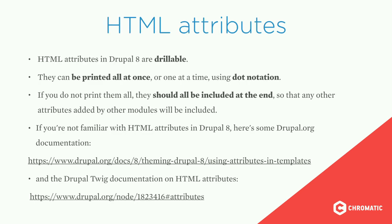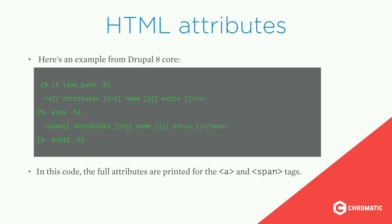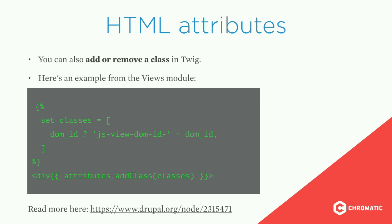HTML attributes in Drupal 8 are drillable — they can be printed all at once or one at a time using dot notation. If you don't print them all, include the remaining at the end so other modules' attributes are included. You can also add or remove a class in Twig. An example from the views module creates an array of classes and adds them to HTML attributes. The spaceless tag removes whitespace between HTML tags — wrap your code in this tag whenever you want to remove whitespace.